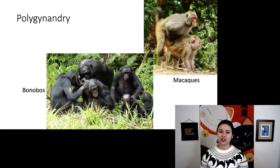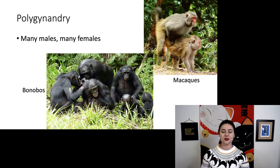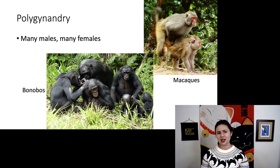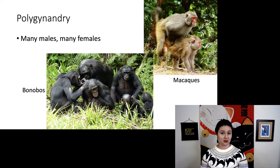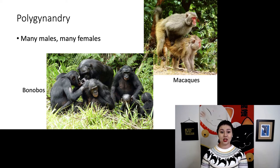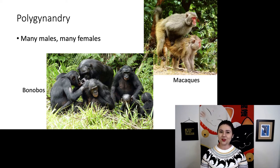Next we have polygynandry — many males and many females. You might also hear this called promiscuous mating, but that's a pretty loaded term, and I suggest avoiding it. We see this in macaques and bonobos, where many males mate with many females, and we see a lot of sperm competition in these species.